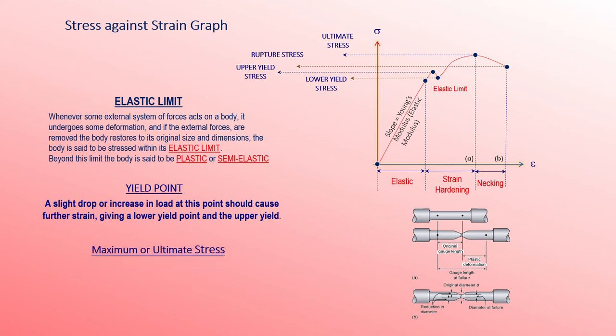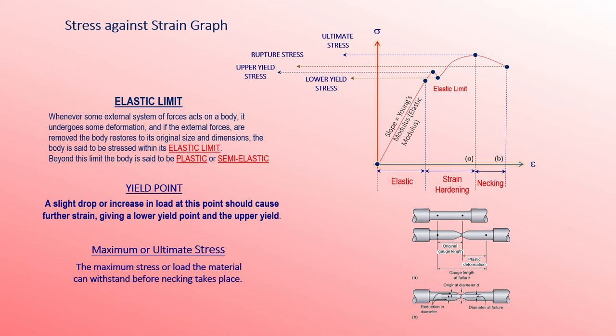The maximum or ultimate stress is the maximum stress or load the material can withstand before necking starts to take place. Referring back to the stress-strain curve, point A represents the ultimate stress, where the specimen begins necking, and point B is where the specimen undergoes failure or rupture.